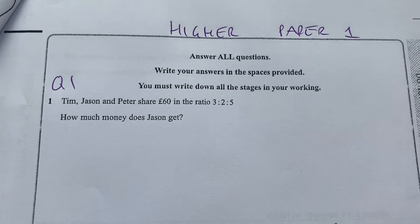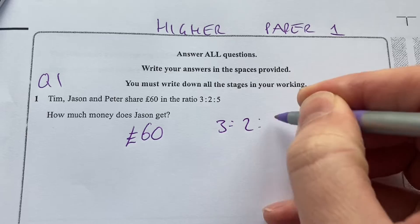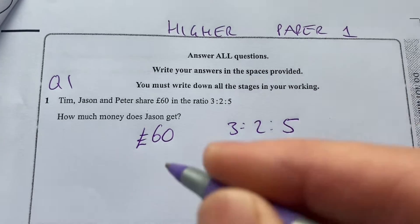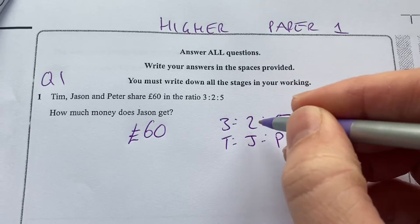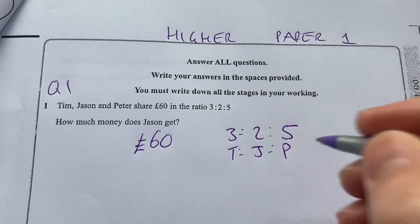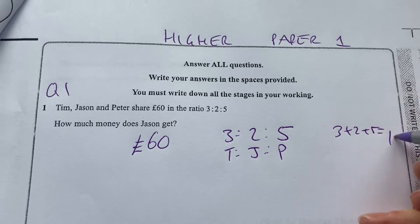Tim, Jason and Peter share £60 in the ratio 3 to 2 to 5. So we've got Tim, Jason and Peter. So there's 3 to 2 to 5 parts, so the thing to do is add those up. 3 plus 2 plus 5 is 10.